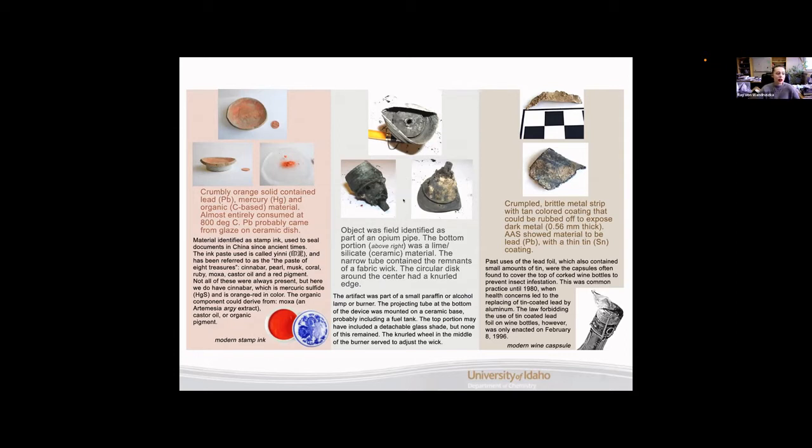Our second artifact here is a really interesting one. It was field identified as part of an opium pipe, but in the lab different chemical analysis showed a pretty different result. This part right here, we're just looking at different angles of the same artifact, this part right here is a lime silicate ceramic base. It has a narrow tube connecting the remnants and this tube had some little remaining bits of a fabric wick. So this circular disc had a knurled edge here and it was twistable. So what this actually was identified in the lab to be was a small paraffin or alcohol lamp or burner. This projecting part here would have been mounted on a ceramic base or probably a fuel tank. This top portion may have had a detachable glass shade sitting on top of it, but that is simply speculation. And you would twist the knurled edge right there in order to make this wick longer, larger flame or smaller, shorter wick, smaller flame.